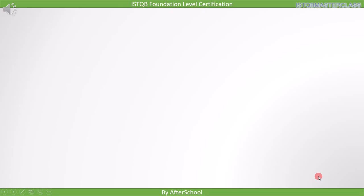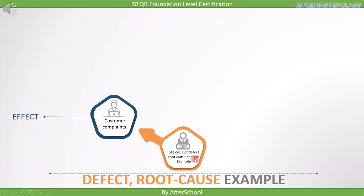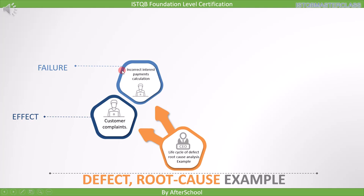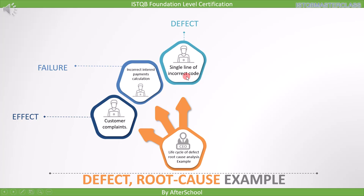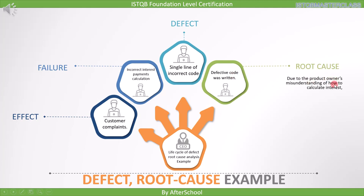We will see one more example to illustrate what we learned about defect and root cause analysis. Here is the life cycle of defect root cause analysis. This life cycle starts with a customer complaint, which is also the effect. He is complaining because he has come across a failure — he received an incorrect interest payment calculation. When we analyze this failure, we find it was caused by a single line of incorrect code. When we further investigate this defect, we find that the wrong code was written because of the product owner's misunderstanding of how to calculate interest. This was the root cause of the defect that made the customer complain.